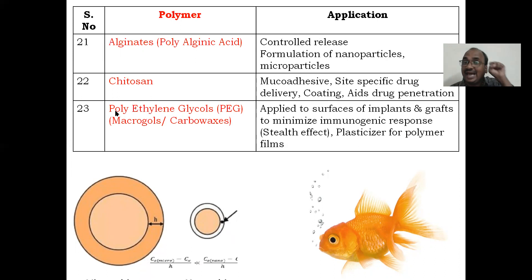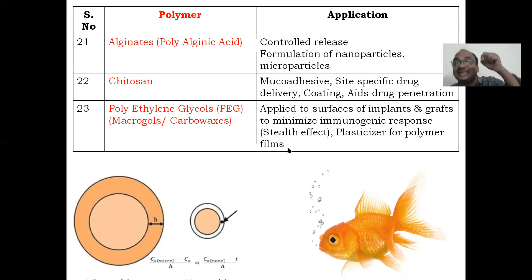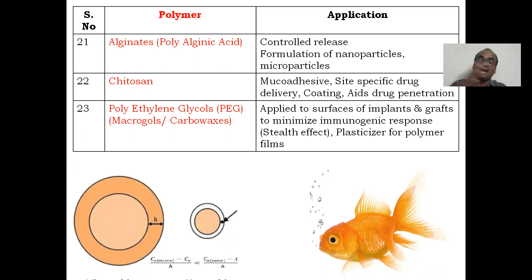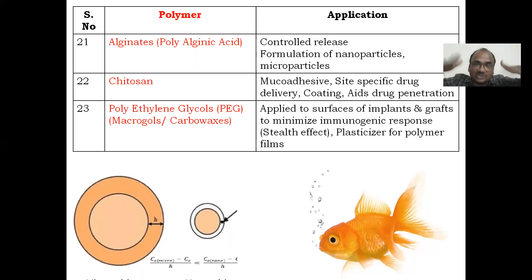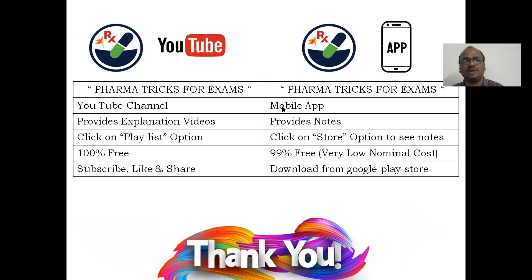Polyethylene glycol (PEG) — small PEG, large PEG — is applied to surfaces, implants, and grafts to minimize the immunogenic response. When there is an artificial kidney transplant, the body reacts and doesn't accept the foreign organ. In such cases immunosuppressants are given; polyethylene glycols can also be used. Download my mobile app and YouTube channel, start reading, and enjoy. All the best.